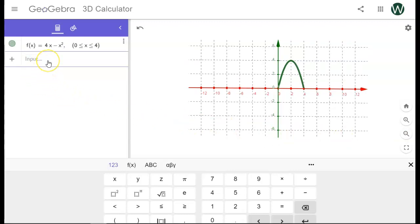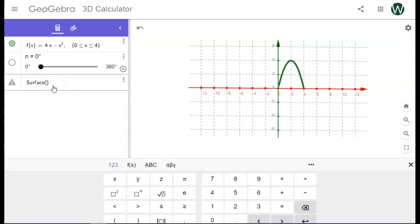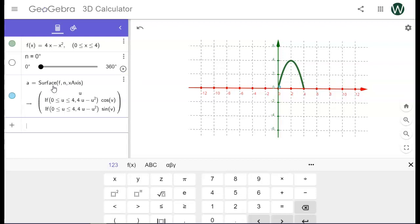Next, I'm going to create a slider. So I'm going to say n equals 0 degrees. And I get a slider from 0 to 360. And now here comes the cool part. I'm going to use a surface function. So I'm going to say surface. And it tells you what to do. It tells you what you need right here. So I'm going to put in the function f, comma, and then the slider n, comma. And then I'm going to rotate this around the x axis. Close parentheses. Enter.